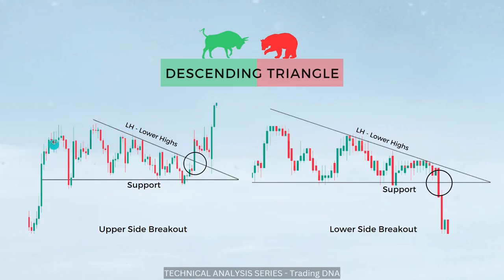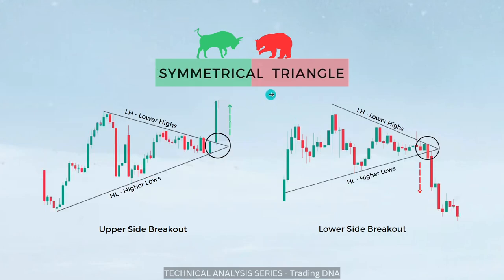For the descending triangle, the stock continuously touches the support and forms lower highs. Once this high is broken you can go for a long; if it breaks the other way, once the support is broken you can go short. For the symmetrical triangle, the pattern is formed when the stock is forming lower highs and higher lows. Once this triangle pattern forms you can expect a breakout in either direction, and wherever the stock gives a breakout you can go long or short. I hope you are clear with these triangle patterns.